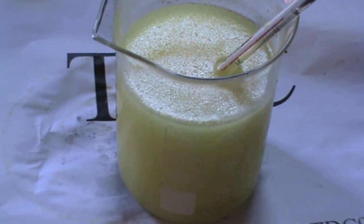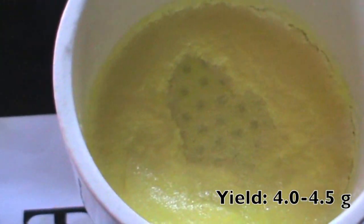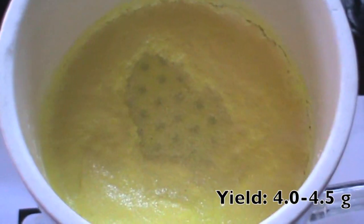After the crystallization, remove the mixture from the ice bath and filter to obtain picric acid. Note, there is no need to purify the crystals as they are quite pure enough. The yield is about 4 to 4.5 grams.